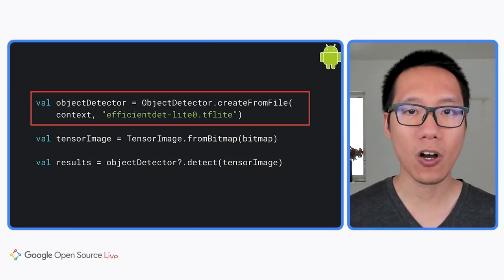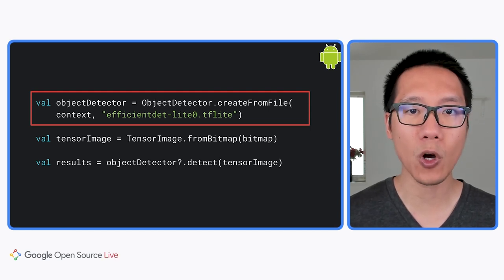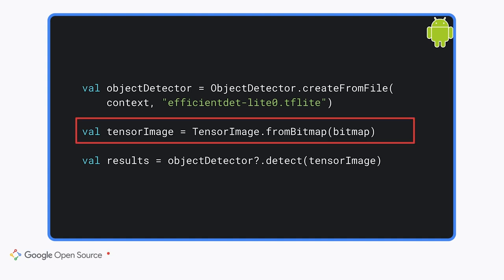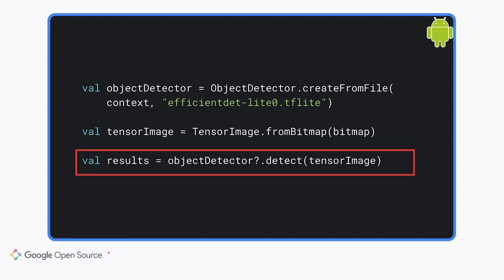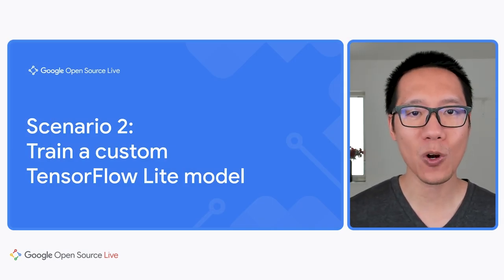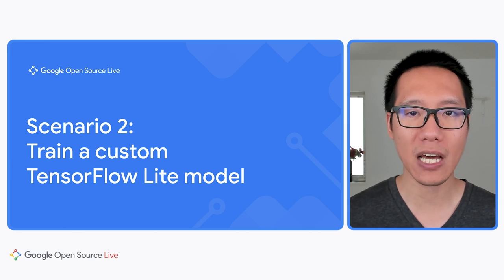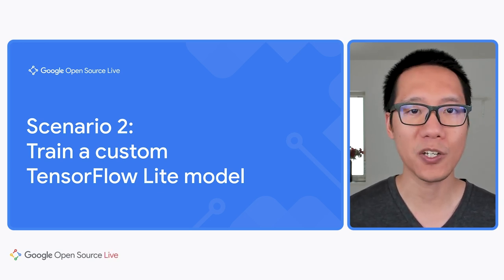And it's that simple — in just five lines of code, your Python application can now detect 70 different types of objects. TensorFlow Lite supports many different platforms, including Android and iOS smartphones. Integrating a TensorFlow Lite pre-trained model to a smartphone application is just as easy. Here's the Kotlin code to integrate the TensorFlow Lite object detection model into an Android app: you start by creating an object detector with the TF Lite model from TensorFlow Hub, create a TensorImage from an Android bitmap, call the detect function, and get back the list of detected objects. However, there are many times when you may want to do something not supported by the pre-trained models — that's when you need to train a custom model.